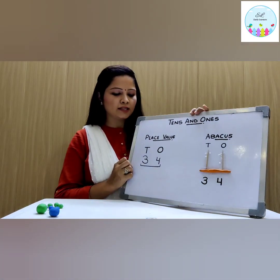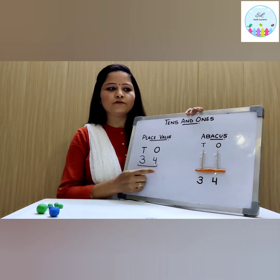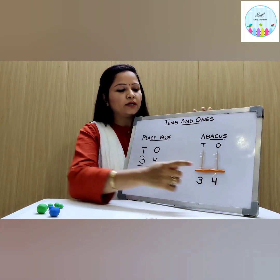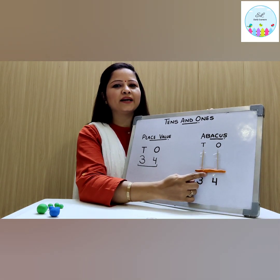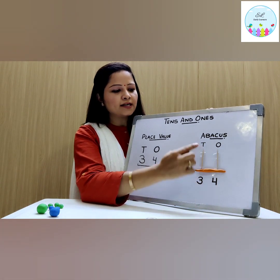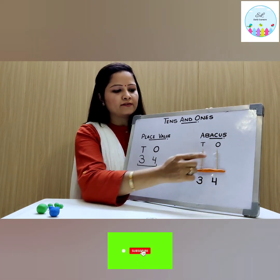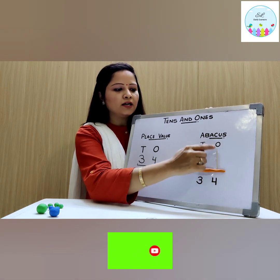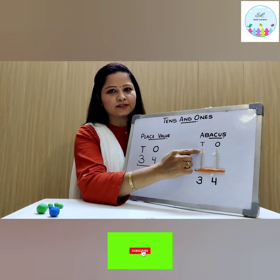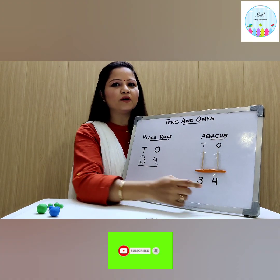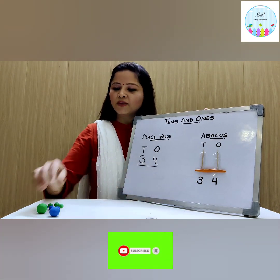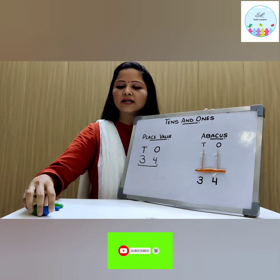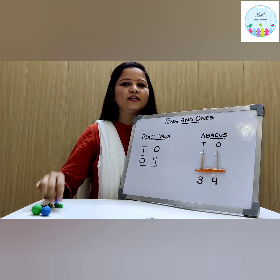Now we will represent this number 34 on an abacus. Do you know we can make an abacus at home with the help of two toothpicks and some clay? I have written T and O here, stuck two toothpicks, and pasted the clay. This is an abacus. Now let's represent this number on the abacus, for which I have different color clay and have made small balls of these clays.